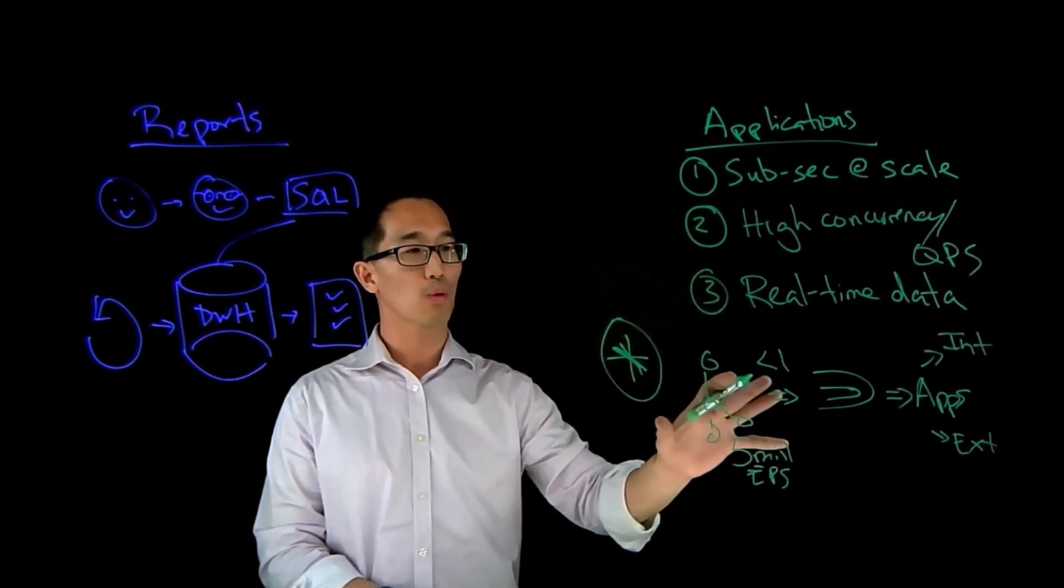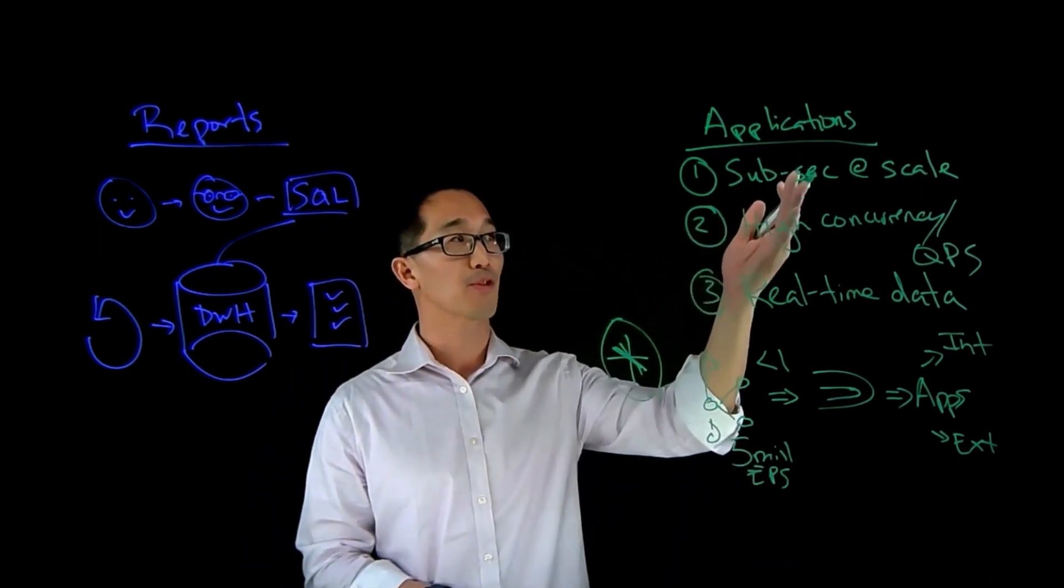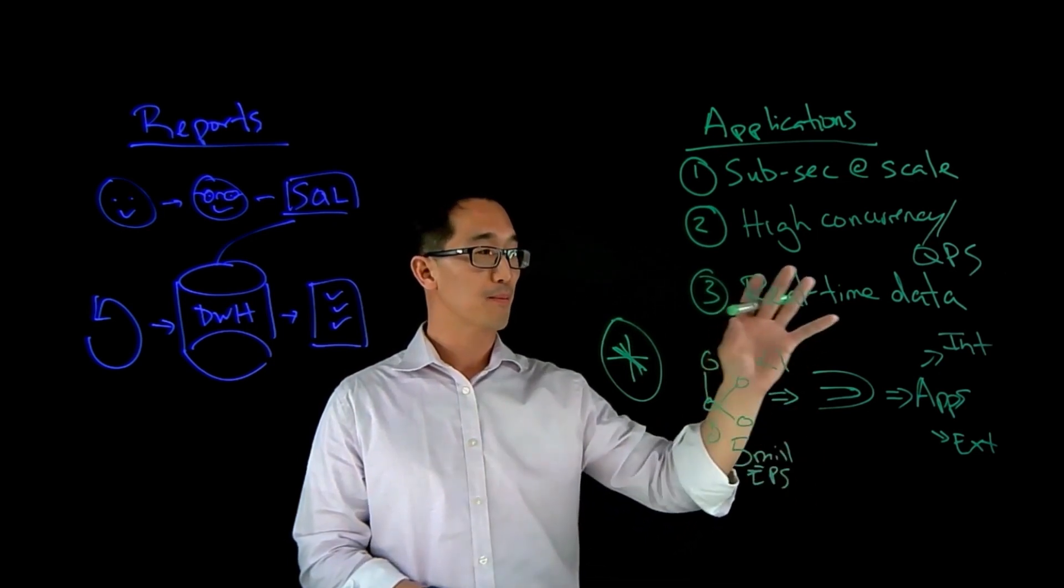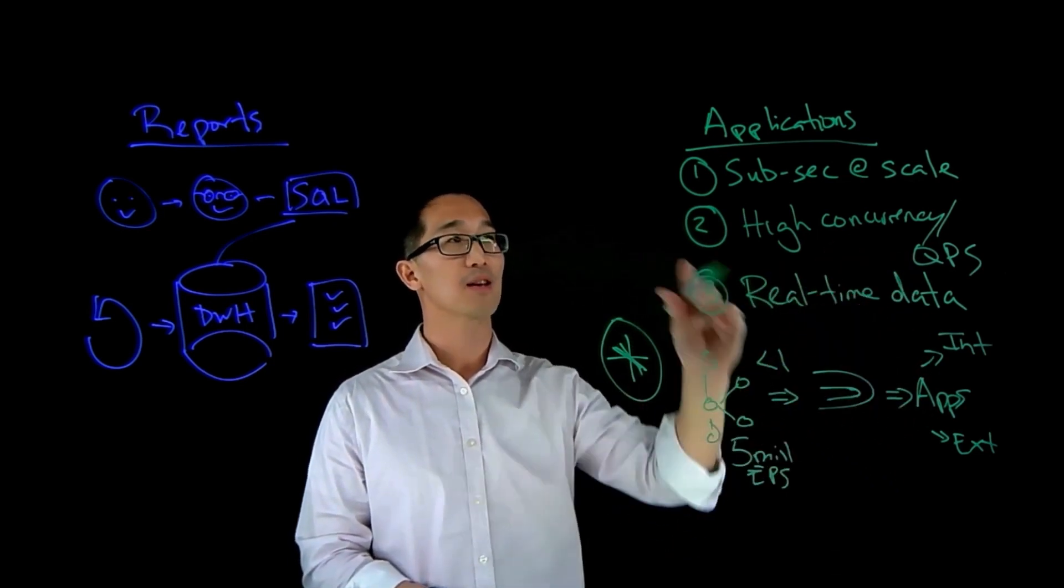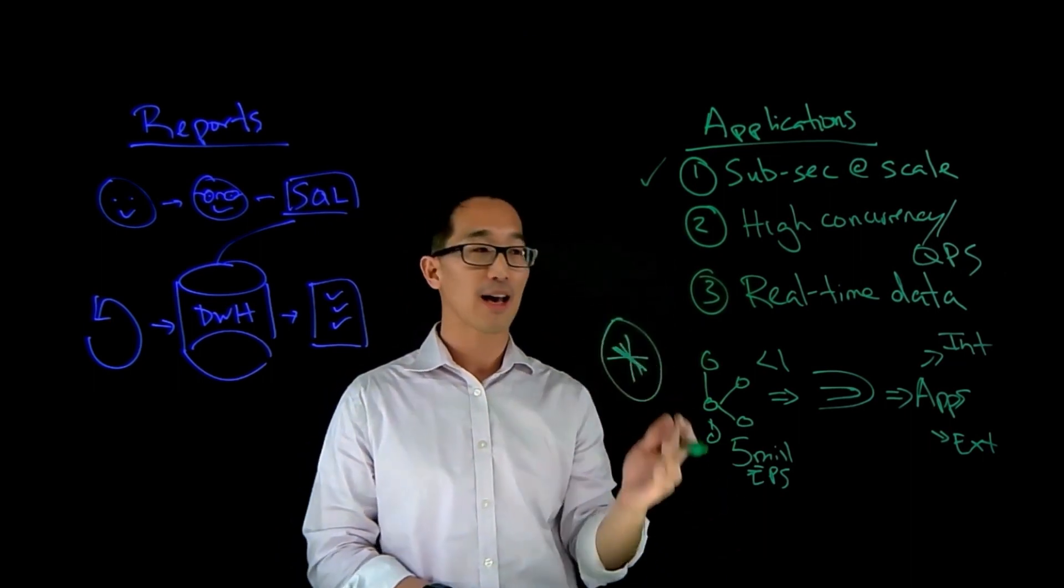And these applications are supporting both internal stakeholders as well as external stakeholders. And so when you look at this overall workflow for Confluent, do they have the requirements for sub-second performance at any scale? Absolutely. Lots of event-driven data, powering applications for lots of stakeholders, performance SLAs are critical.